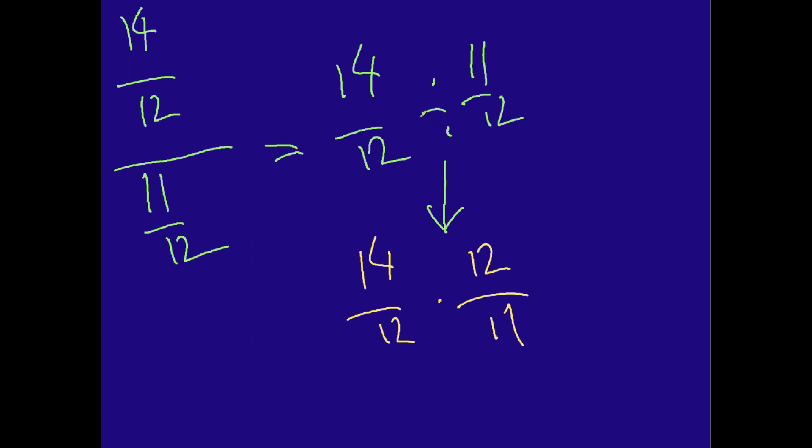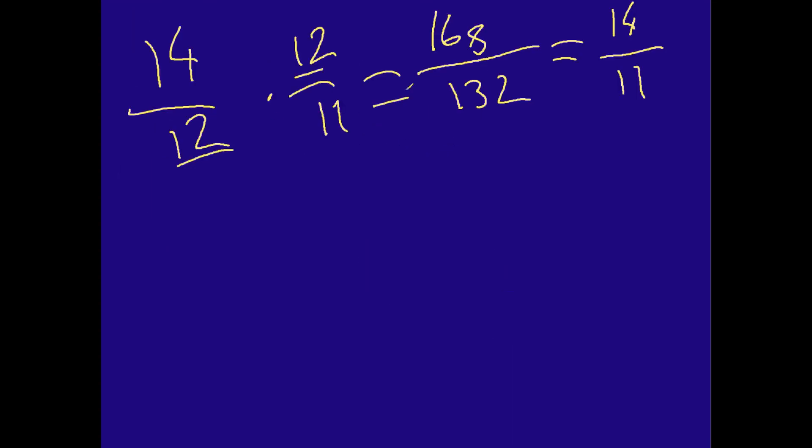And whenever you divide rational expressions, you use the reciprocal of the second term, the term to the right of the division sign. And you can multiply across. And that is how we got our final answer here.